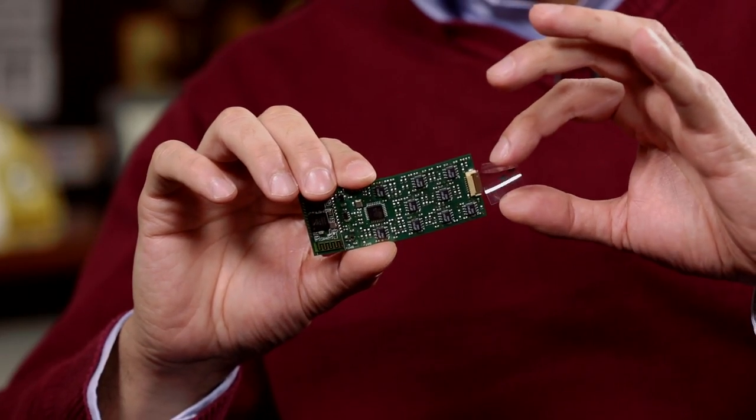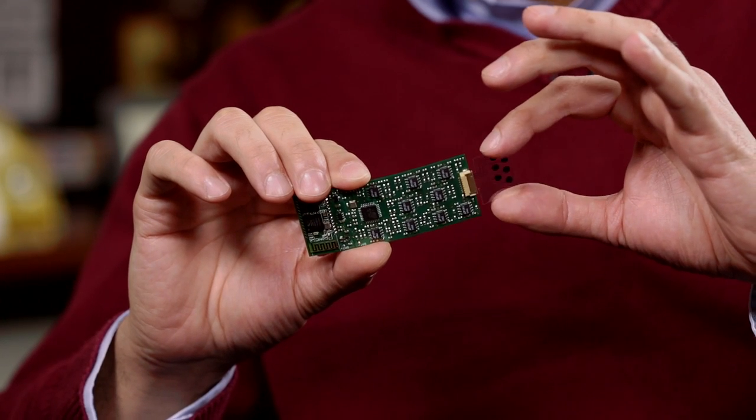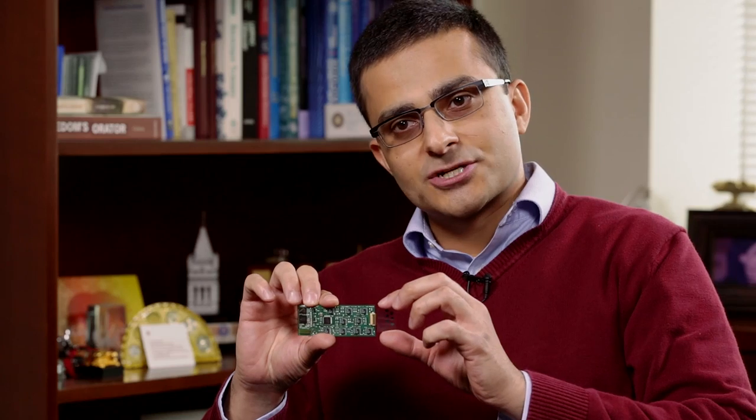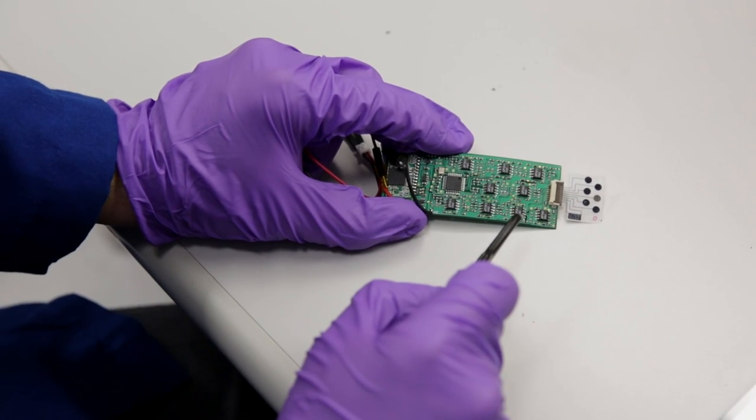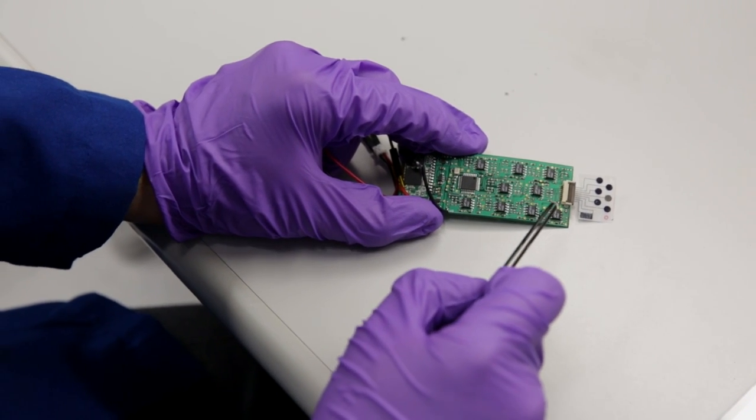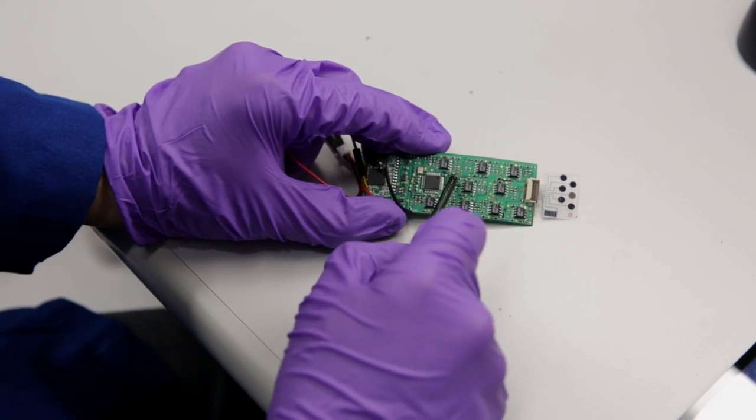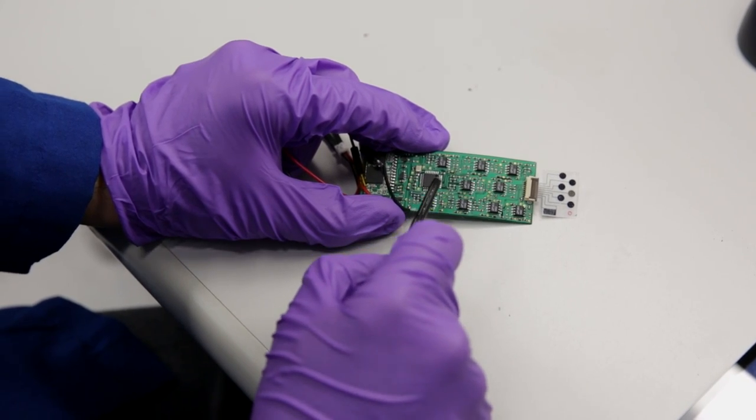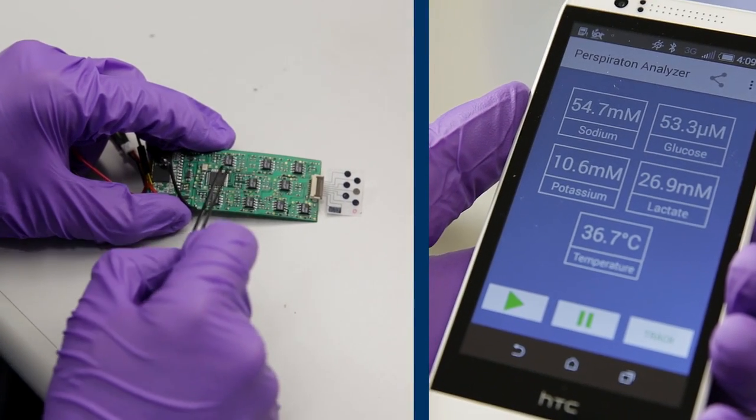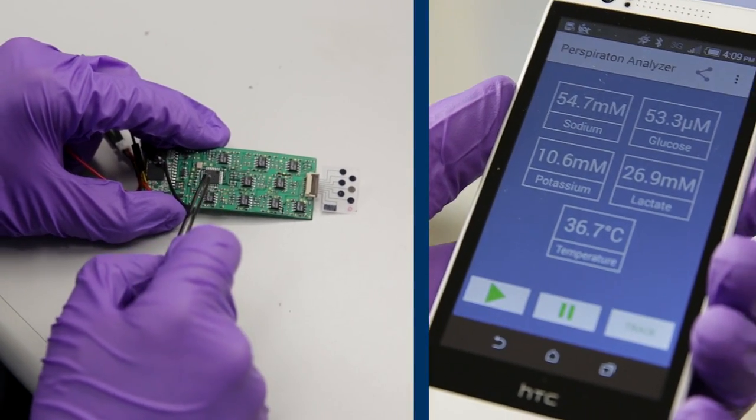There is the flexible printed electronic component. This is where we have the sensors to detect the different chemicals in sweat. And there's a second component and that's where we can process the information, we can analyze the data, and we can also transmit the signal wirelessly, for example, to a cell phone.